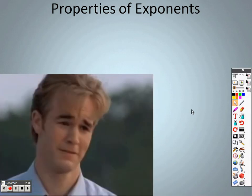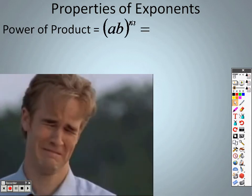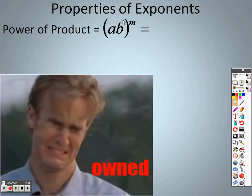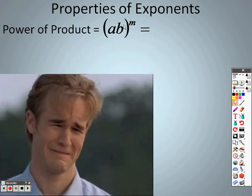So continuing with the powers, the properties of exponents, we have the power of product. And what that means is if I have an m here, I can take that through to both items. And the reason I can is there are actually exponents here. This is like saying a to the 1st power and b to the 1st power.